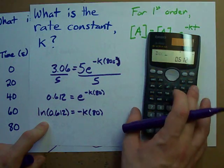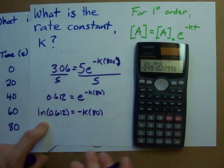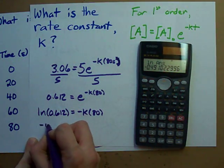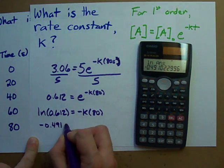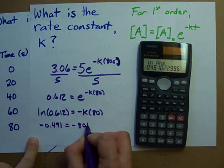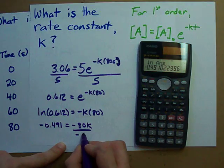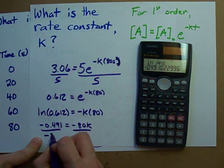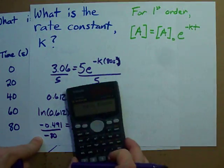The ln of that number is, turns out to be negative 0.491. And to solve for my K, all I have to do is divide both sides by negative 80. Look, it cancels right out.